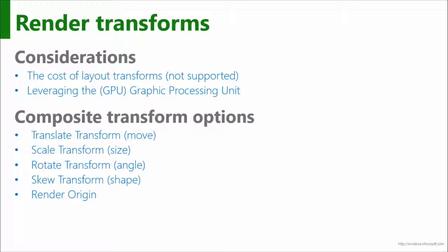Layout transforms were the ability to apply changes to controls that impacted the overall UI layout. This was very costly because as you moved, rotated, or scaled something, everything else had to be remeasured. That's not supported in WinRT, partly because of the serious negative performance implication. What we do have is render transforms, where we can send it off to the GPU and allow it to process — something it can do with no problem — and we can move, scale, rotate, and skew items easily without impacting layout.